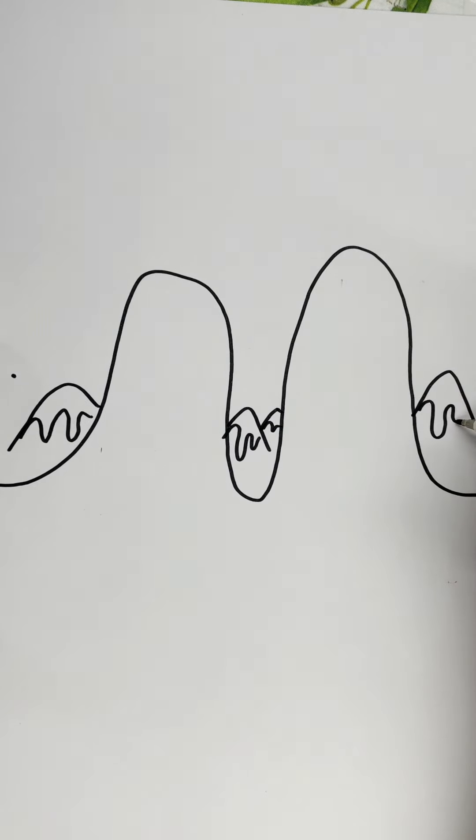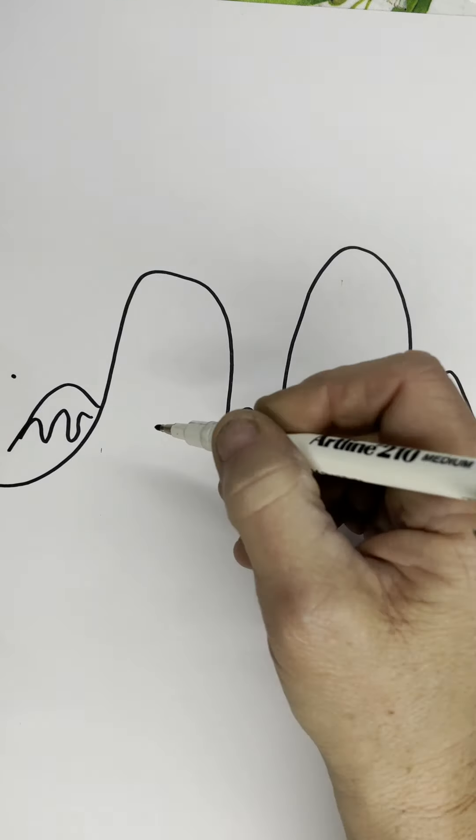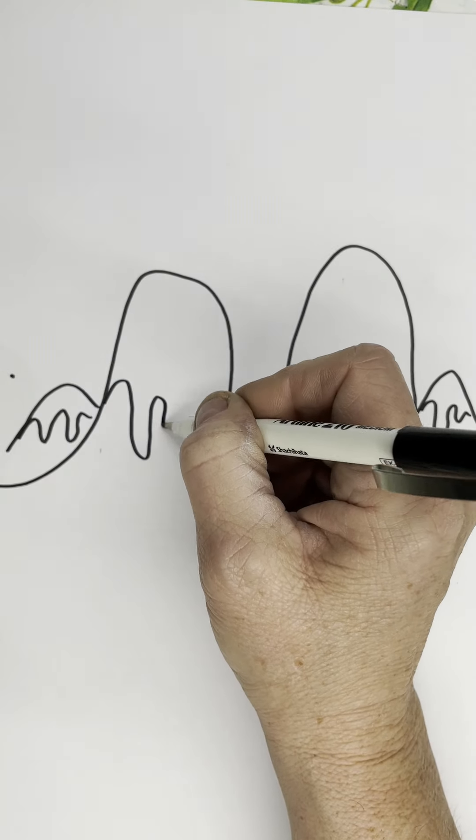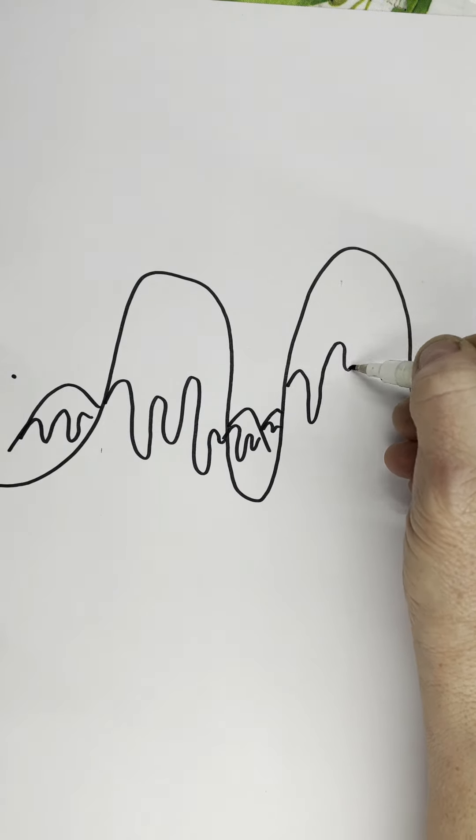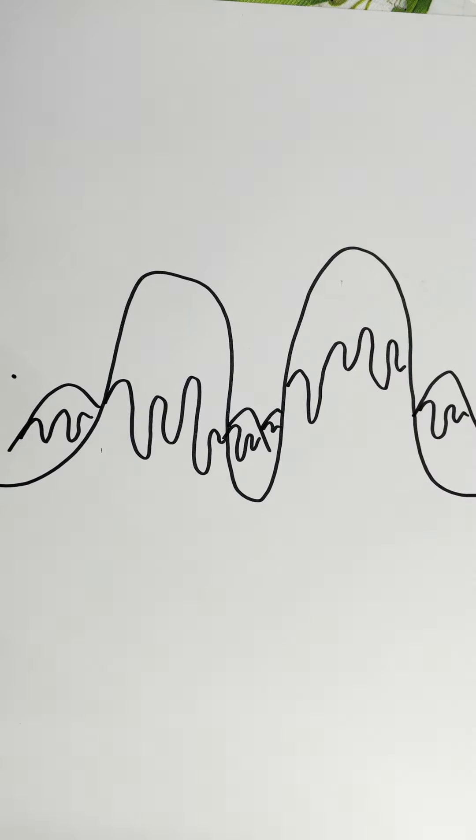If I put these wobbly lines underneath the tips of those triangles, it starts to look like hopefully snow-capped mountains. Those wobbly lines can be anywhere you want them to be, don't have to be perfect at all.